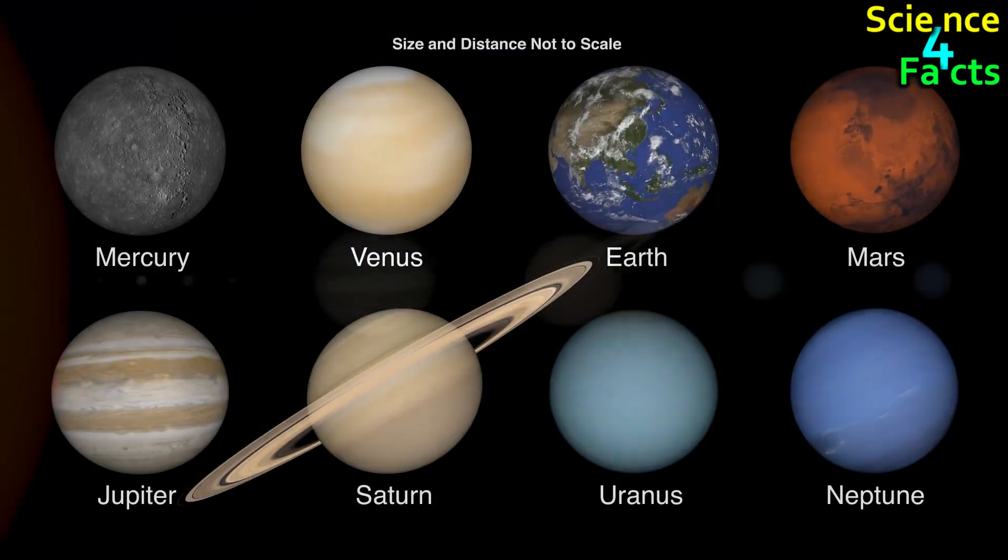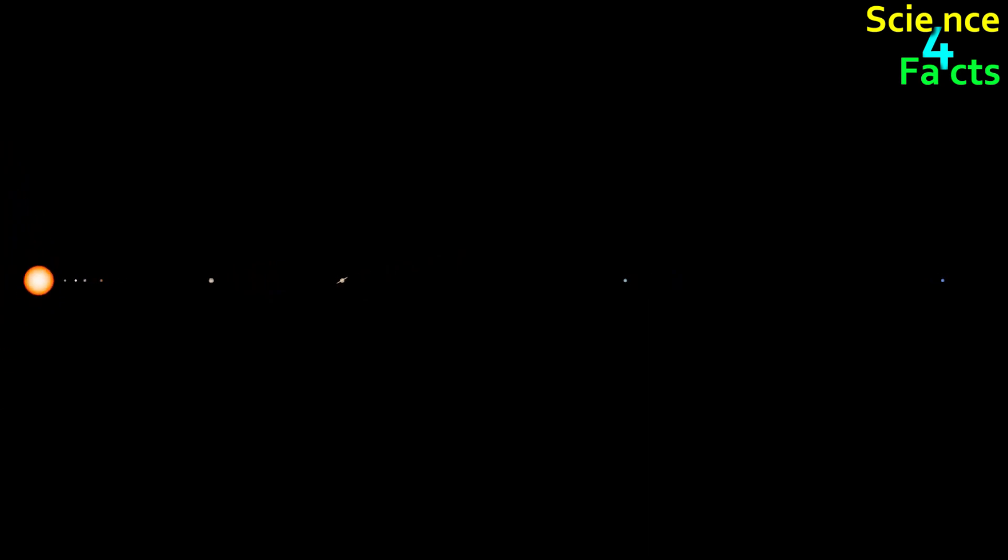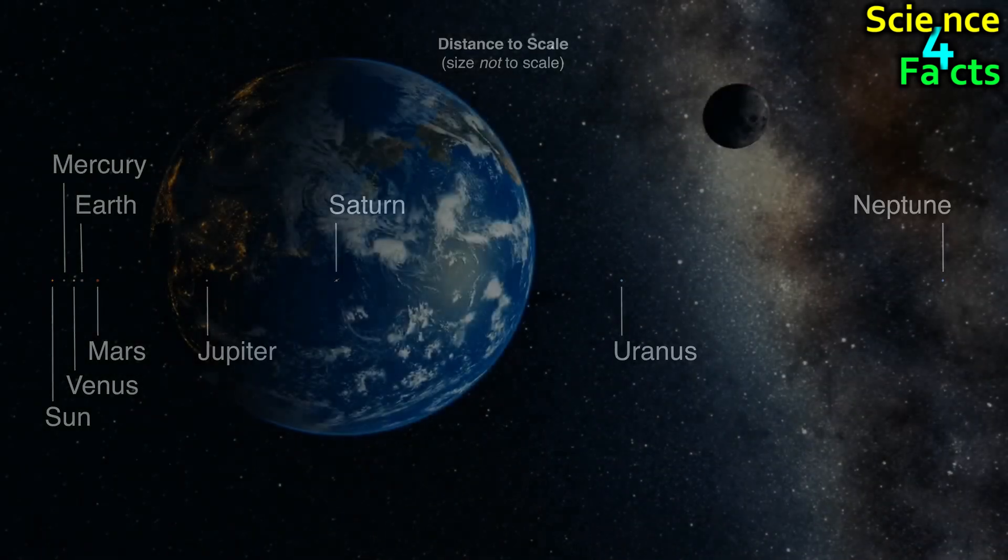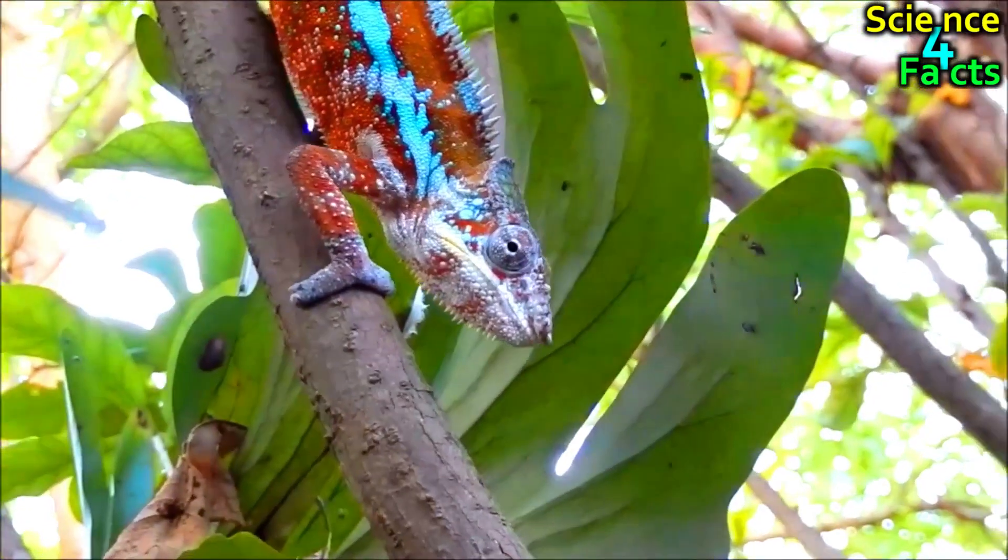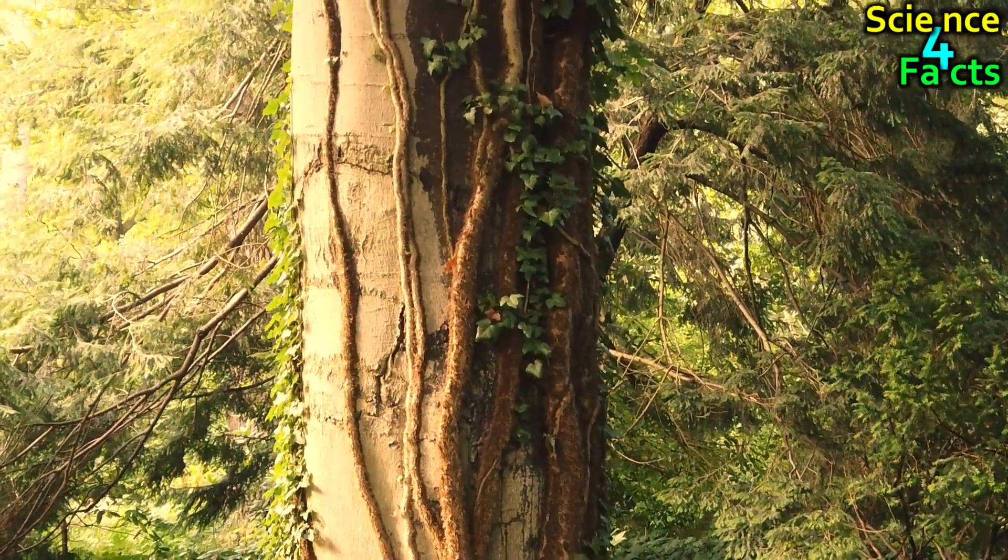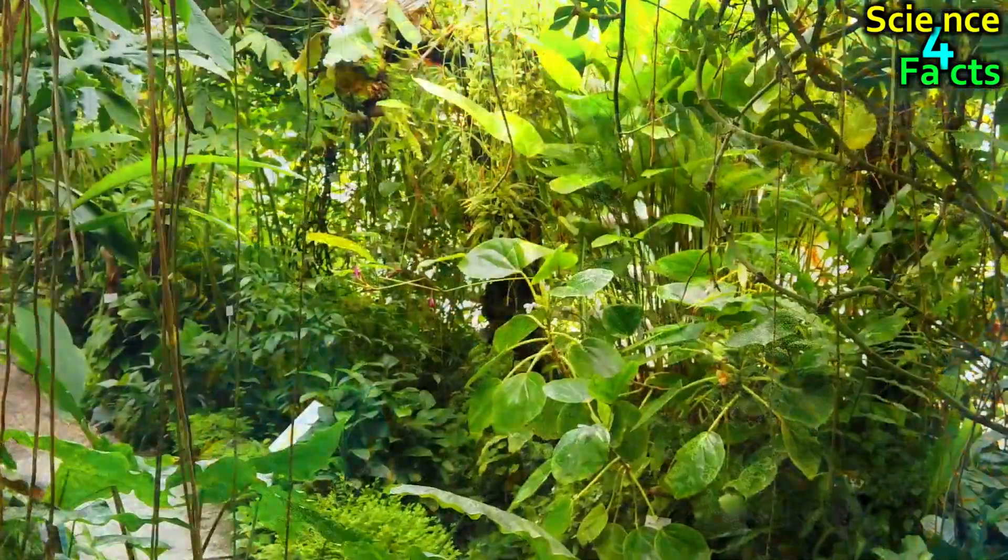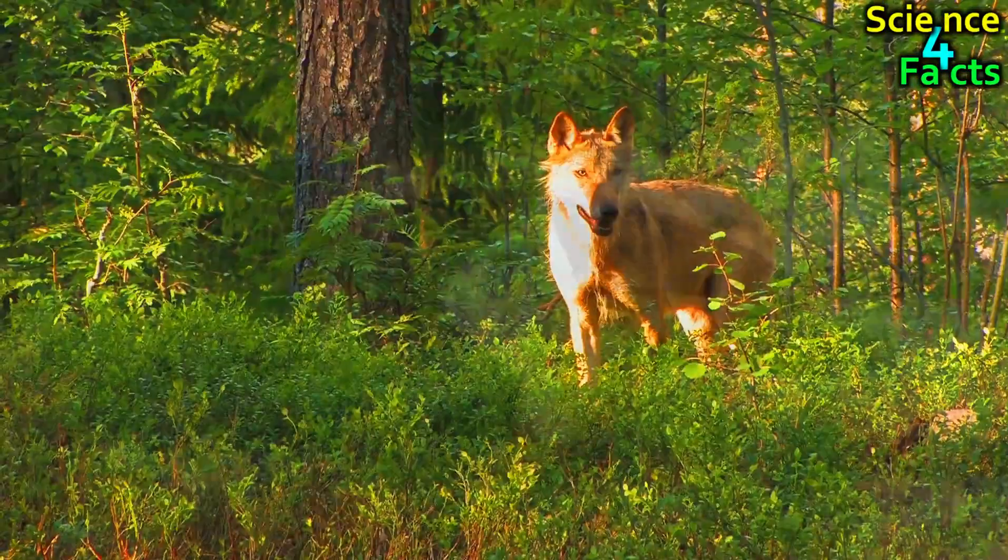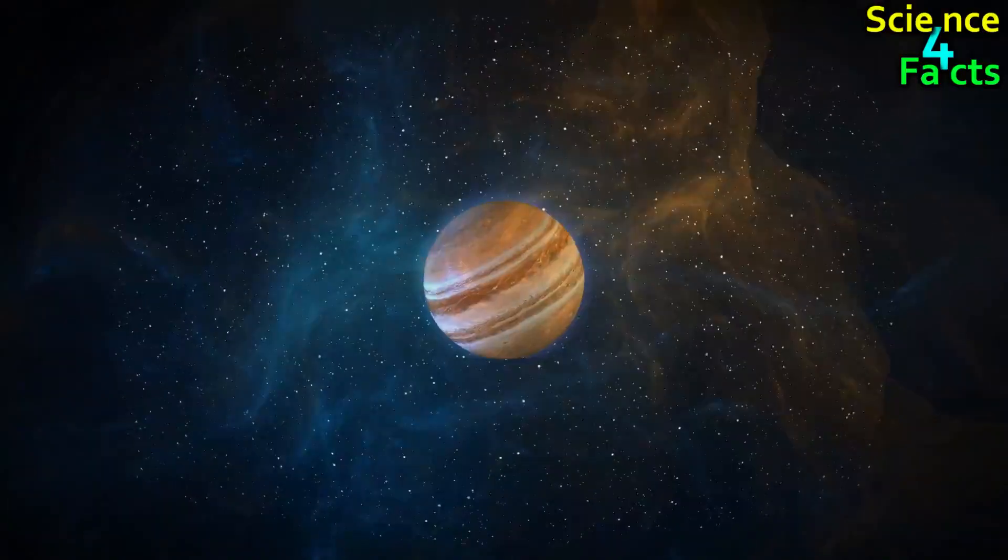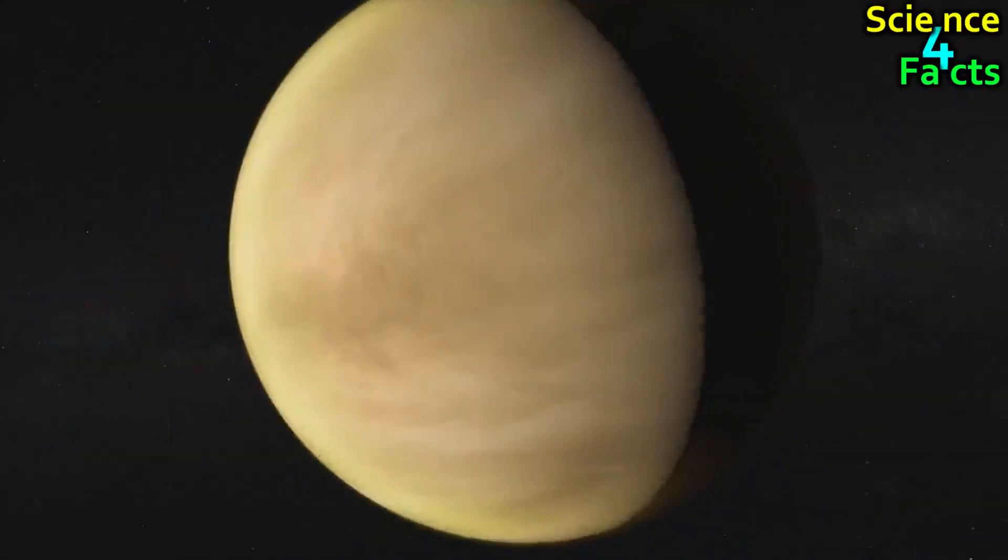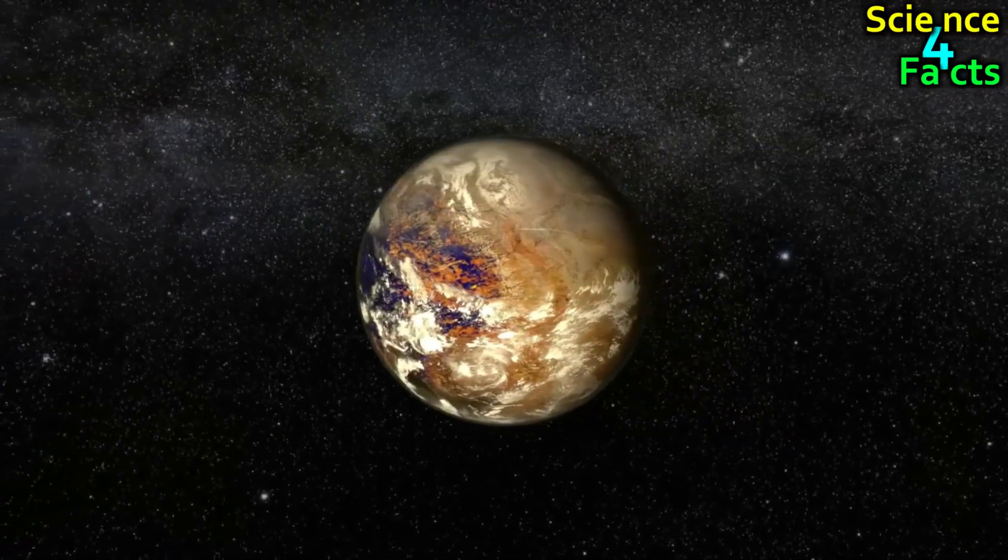Our solar system is home to a diverse array of planets, each with its own unique set of characteristics and features. Earth is a remarkable planet in our solar system that supports life in all its diverse forms. From the towering trees of the Amazon rainforest to the tiny microbes living deep beneath the ocean floor, Earth's biosphere is a testament to the remarkable adaptability and resilience of life. Most of the other planets have environments that are unsuitable for life as we know it. They offer an intriguing glimpse into the vast and varied nature of our universe.